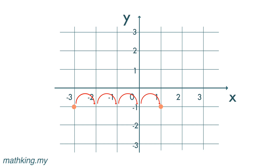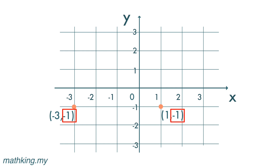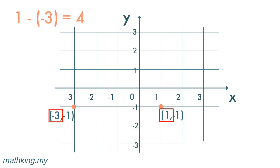Or we can use subtraction to find the difference. The y-coordinate is negative one for both because both points are one unit below the x-axis. The x-coordinates are different: one is one, the other is negative three. One minus negative three is four. The difference between the x-coordinates gives us the distance, which is four units.